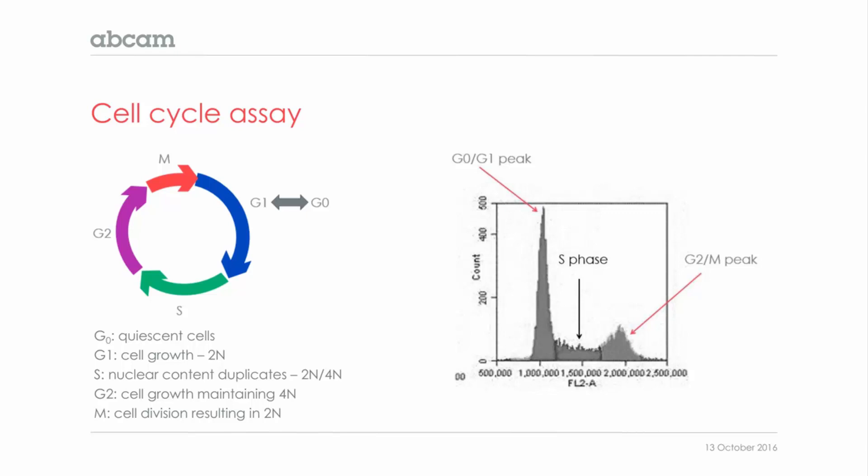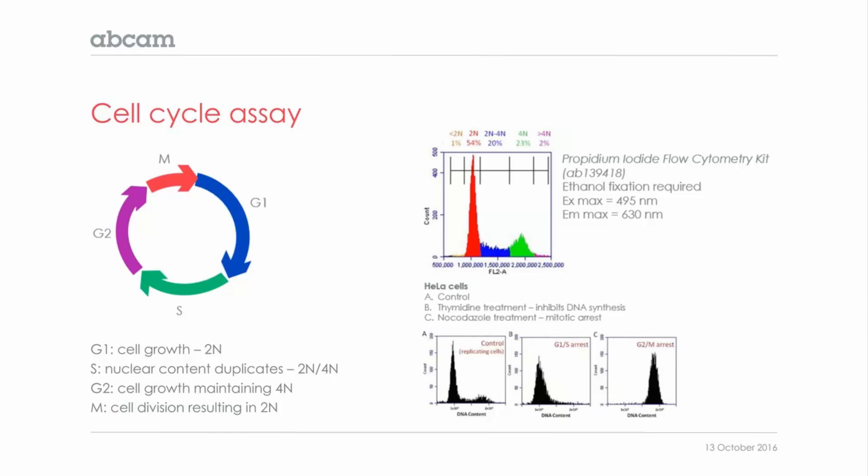Here you can see how we use propidium iodide to stain HeLa cells exposed to different conditions. The control group in panel A shows the typical profile of healthy cells — a big G1 peak and a small G2M peak. Treatment with high concentration of thymidine, shown in panel B, interrupts the deoxynucleotide metabolism pathway and blocks DNA replication, causing most cells to arrest in the G1/S peak. Nocodazole treatment in panel C inhibits microtubule polymerization, causing cells to arrest in mitosis as metaphase spindles cannot be formed, so most cells are found in the G2M peak.